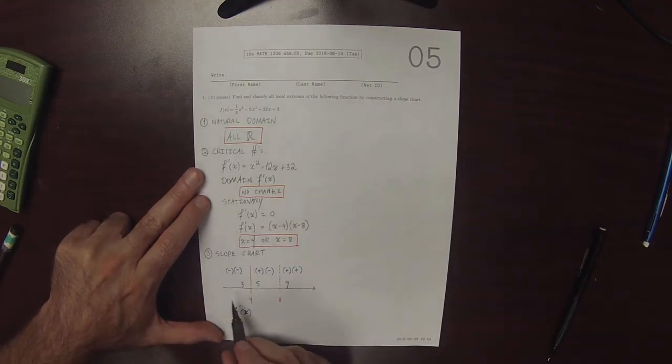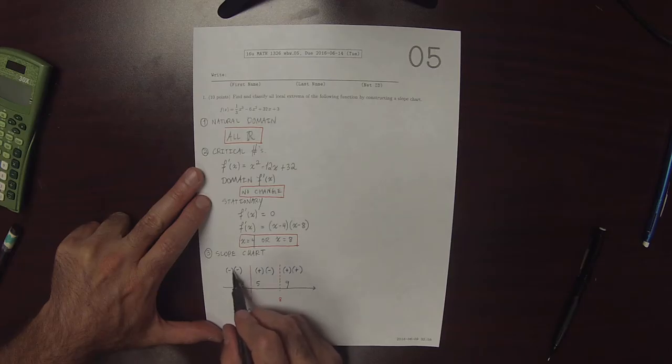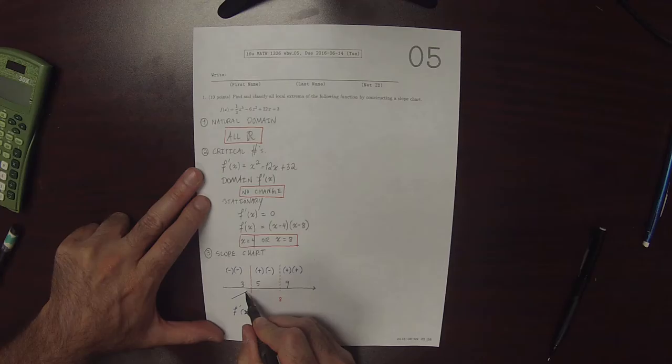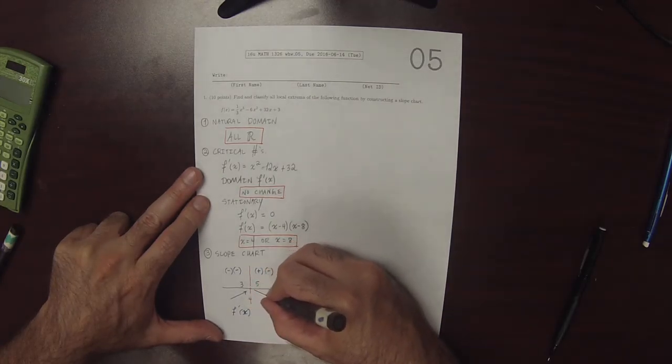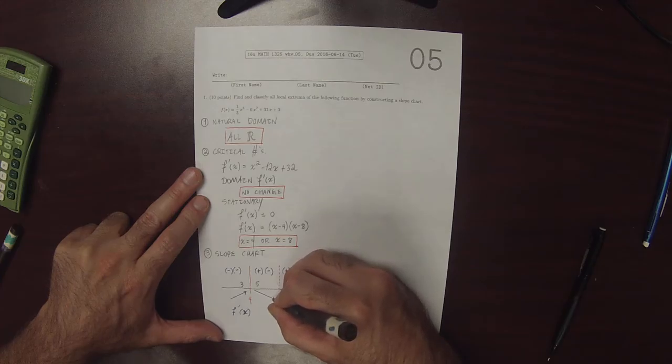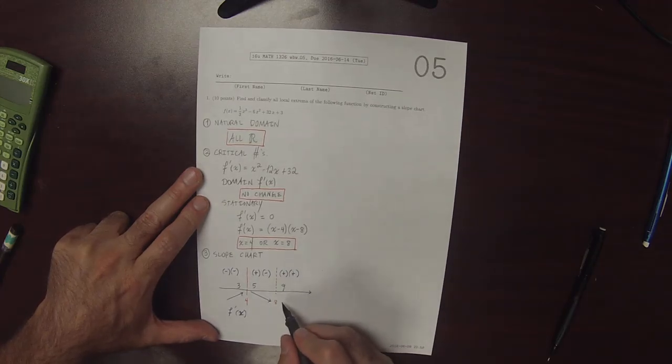So the overall slope, the overall sign here is positive. So that's positive slope. The overall sign here is negative. So that's negative slope. The overall sign here is positive.